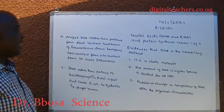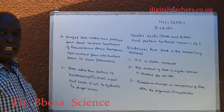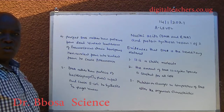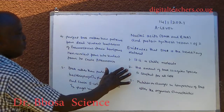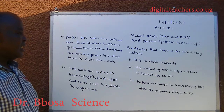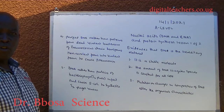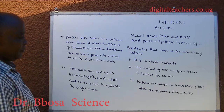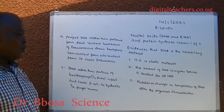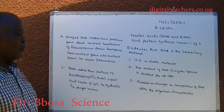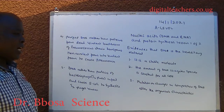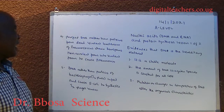Evidence says that DNA is a hereditary material. One, it is stable. Two, the amount of DNA in a given species is constant for all cells. Three, mutation: all changes in the composition of DNA alter the organism's characteristics.